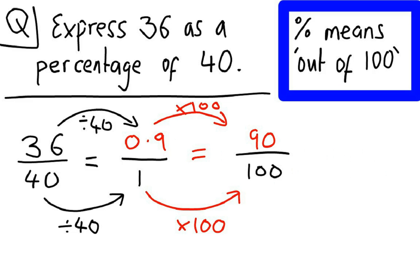Now once again, as soon as we have it out of 100, then we've got exactly what we need to be able to express it as a percentage, which is what the question is asking of us. So 90 out of 100 simply becomes 90%, which means that 36 is 90% of 40.